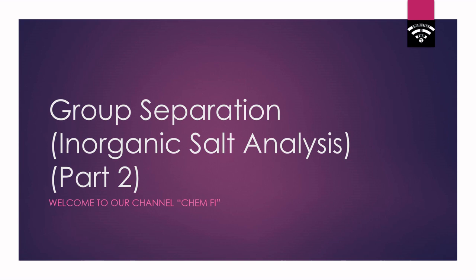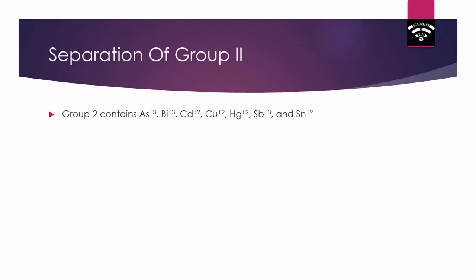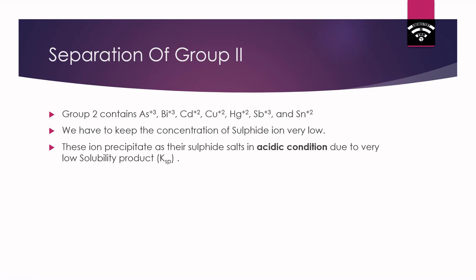Welcome to the Kimphi YouTube channel. Today we are going to discuss the qualitative analysis of Group 2 cations. Group 2 cations contain arsenic, bismuth, cadmium, copper, mercury, antimony, and tin. Some books also consider Pb2+ as a Group 2 cation, but here we are not going to consider Pb2+ as a Group 2 cation.